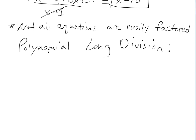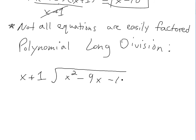The first thing you do is write it in the form of a regular long division equation like you're used to doing by hand: x squared minus 9x minus 10, divided by x plus 1. When we look at this, the first thing you have to do is look at the highest power on each side — here it's x on the divisor side and x squared on the dividend side.